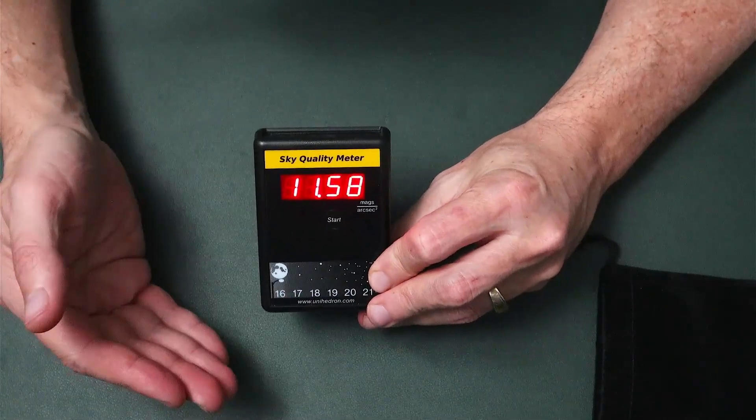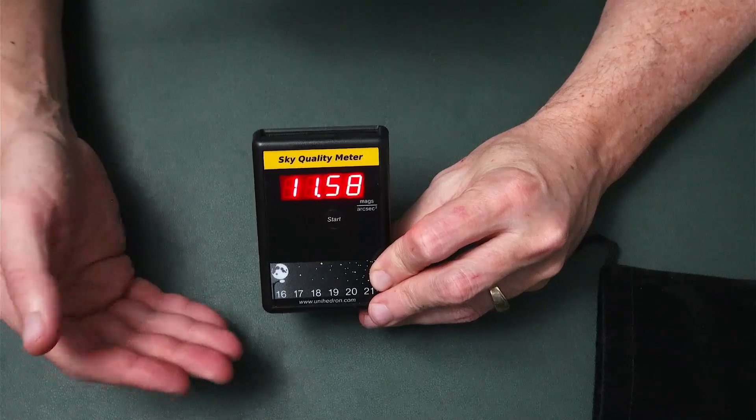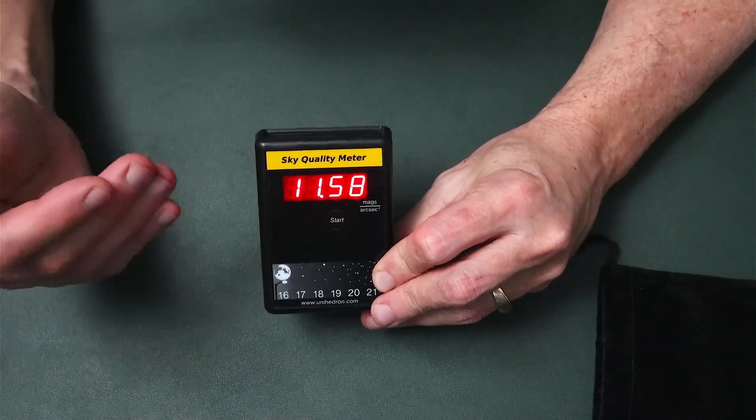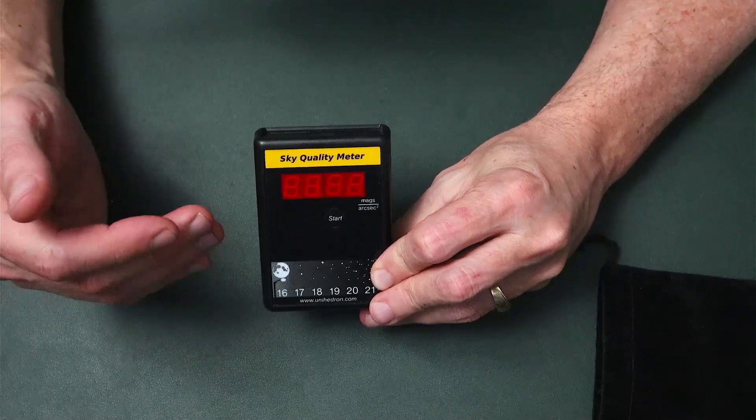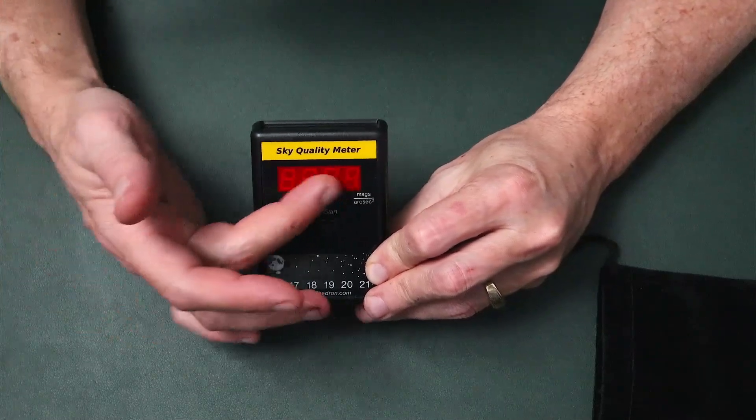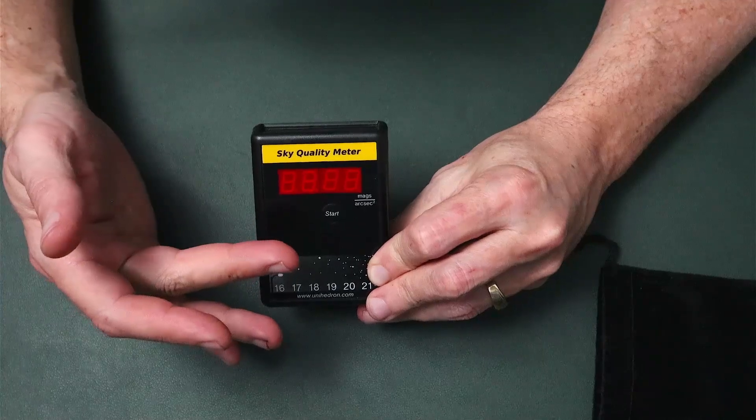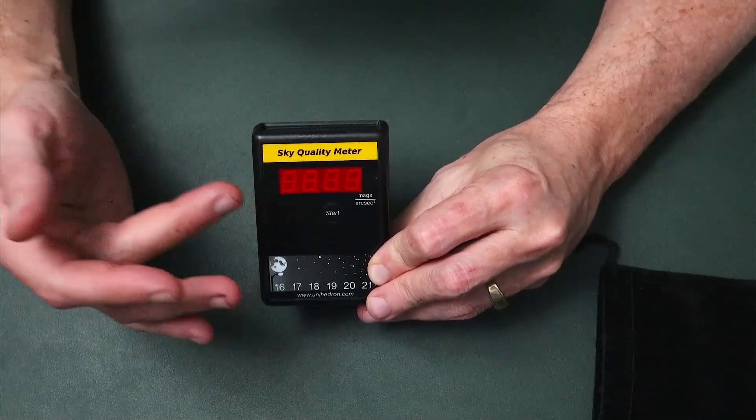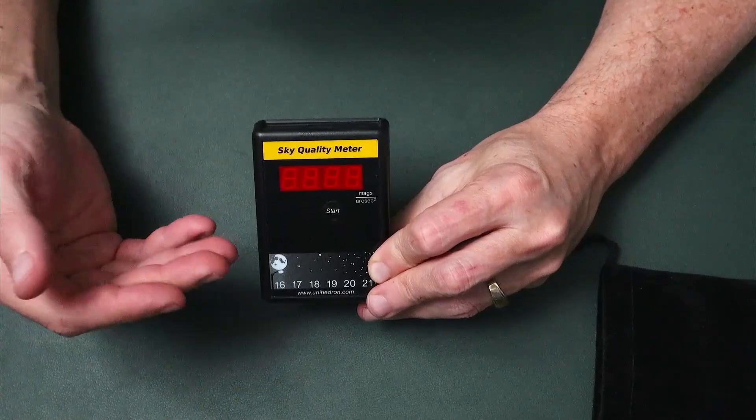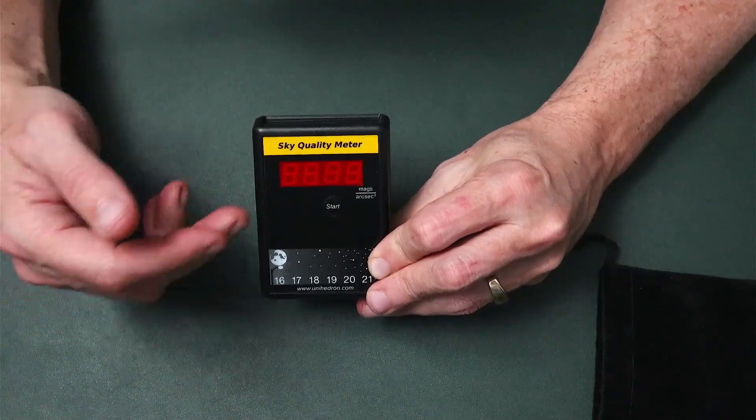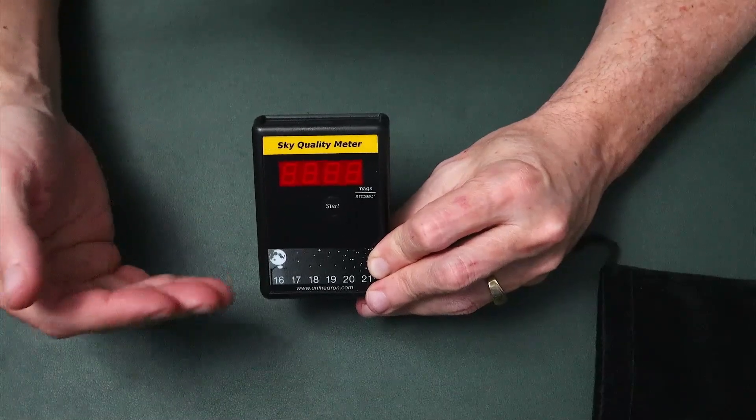But if you're under really dark skies - again we're talking Bortle 1, 2, and maybe even Bortle 3 - that measurement can take up to 60 seconds to complete. So when it's measuring, there's nothing on the screen. Just be patient if you're under dark skies. You'll hear a very light beep as it's taking that measurement, so you do have an audible indication that's actually taking a measurement.